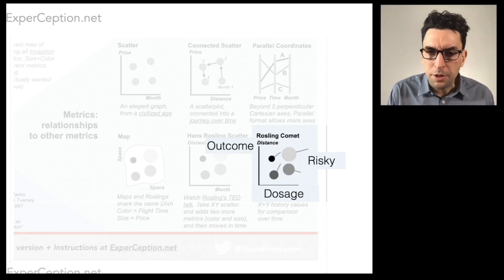But weirdly, for those patients on the left side with the smaller bubbles, with the lower risk factors, we're lowering their dosage and their outcomes are getting worse. Hmm, counterintuitive. We should do something about that.